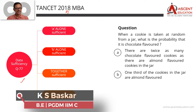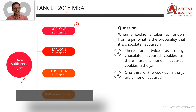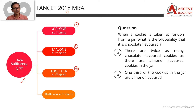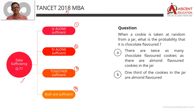In the 4 answer options: Statement A alone is sufficient will go with option 1. A alone is not sufficient, B alone is sufficient — exactly opposite. B alone is sufficient, A alone is not sufficient will go with option 2. B alone is not sufficient — go with option 4.